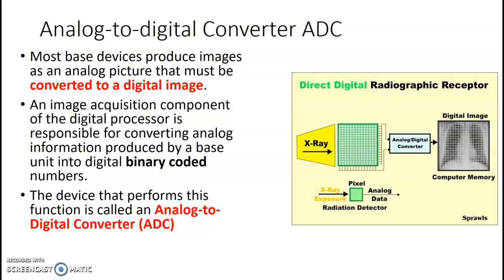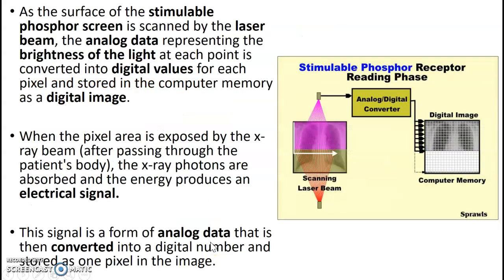The analog to digital converter — ADC — converts your x-ray images from an electrical signal into binary numbers, producing the digital image. If you're using a photostimulable plate, the signal is in the form of analog data, then converted into a digital number stored as one pixel on each image.